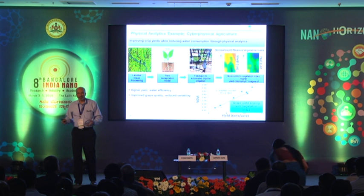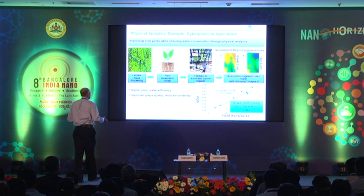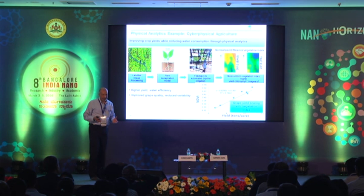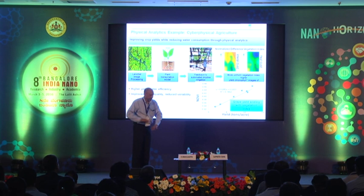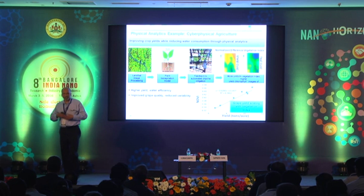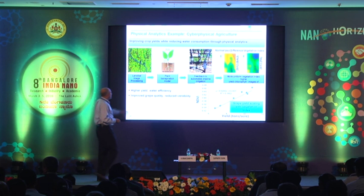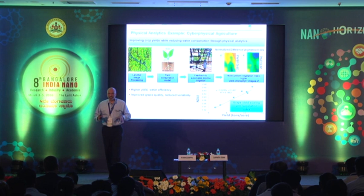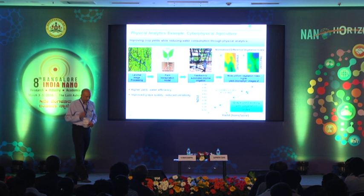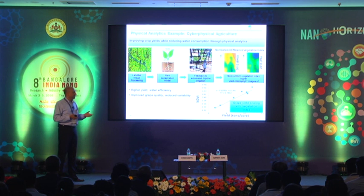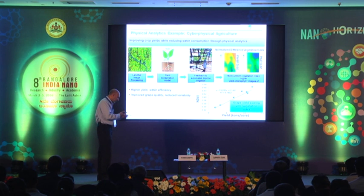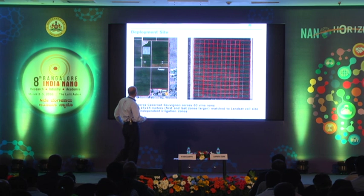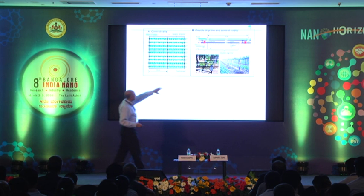From that data, using standard agronomy models, you can calculate how much water is going to be required by that plant. We took a test field, and vineyards are typically irrigated using drip irrigation — as also used in Maharashtra and India. We took these drip irrigation lines and pixelated them by putting throttle valves so that we could control the amount of water going to a 15 by 15 meter area with roughly 40 to 50 grapevines. We could then calculate how much water was needed and dose exactly that amount. We had a control area and an experimental area.